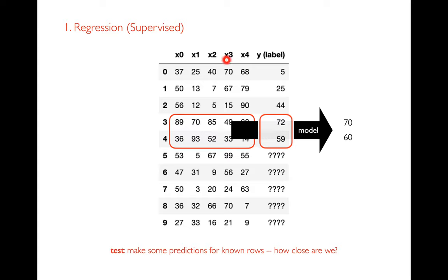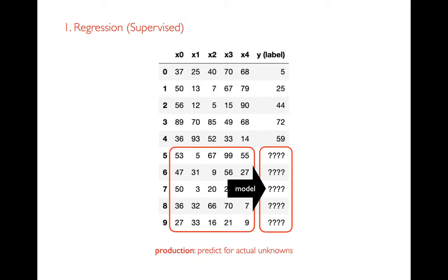After I've learned and evaluated my model on known cases, I might actually put it into production — meaning I'm using it for real things, trying to predict actual unknowns in the world. For example, if I add a new house to the market, what might it sell for?